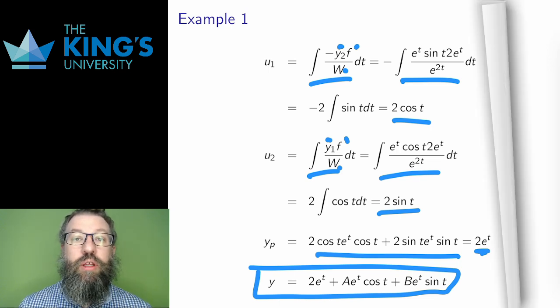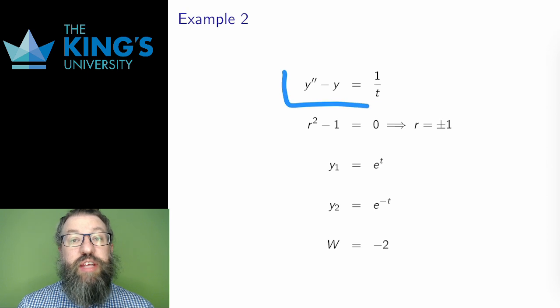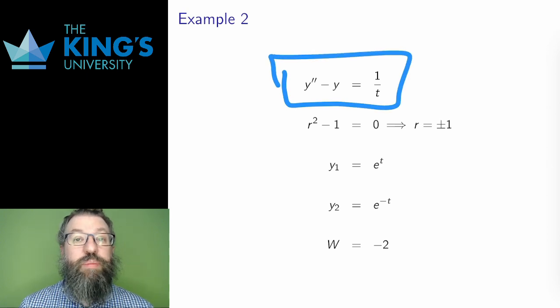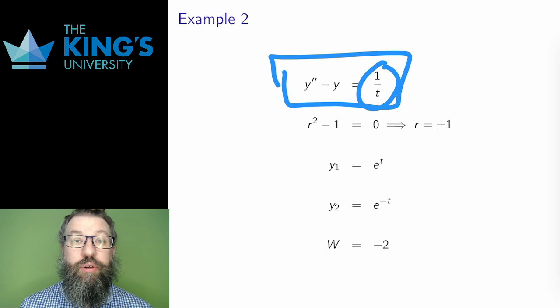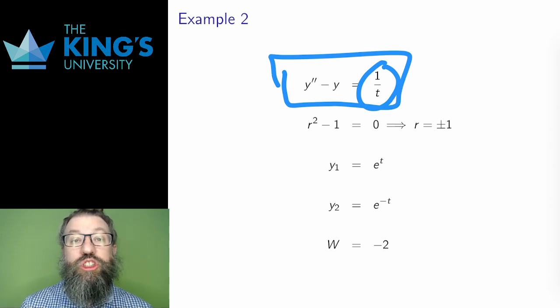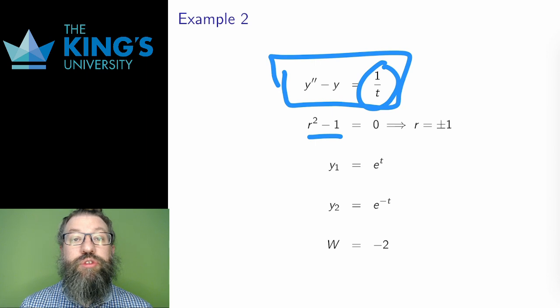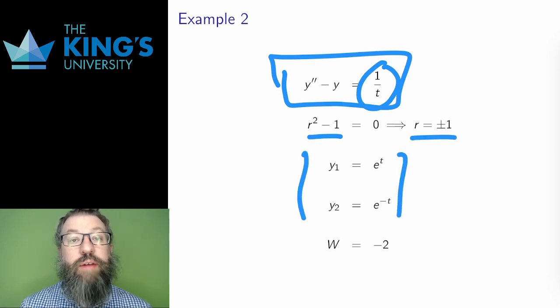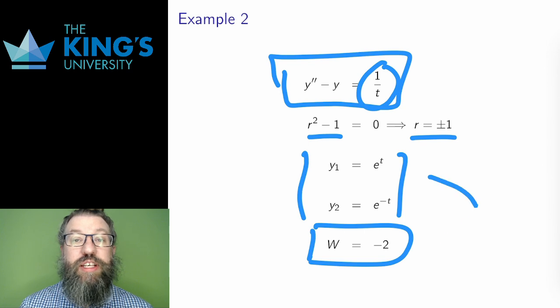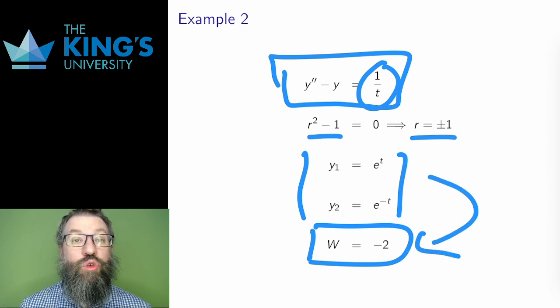Here is one more example. The previous example could have been done by undetermined coefficients, but this one can't. This one needs variation of parameters. I'll start with homogeneous solutions via the characteristic equation. The solutions are e to the t and e to the negative t. The Wronskian, which I haven't shown the work for, has a bunch of nice simplifications and works out to just negative 2.